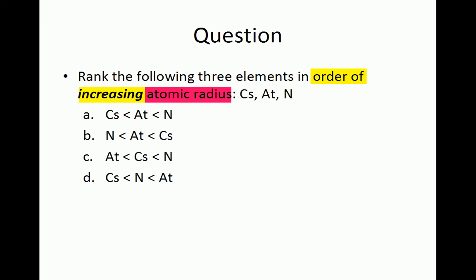So we see that we are ranking cesium, astatine, and nitrogen in order of increasing atomic radius. Lastly, it is always good to stop and think about if the smallest or largest should go first to avoid a careless error. If you are ranking them in increasing order, the smallest should be first and the largest should be last.